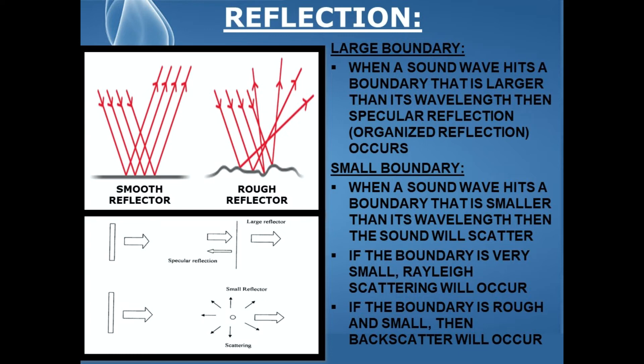Conversely, when a sound wave hits a boundary that is larger than its wavelength — this is a large boundary — then specular reflection will occur, and this is an organized type of reflection.